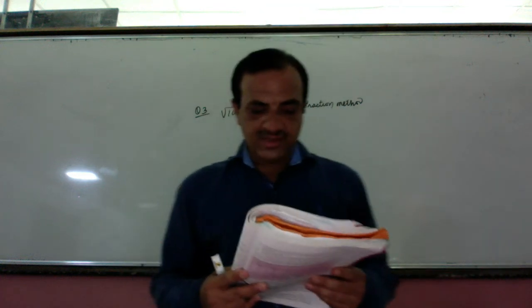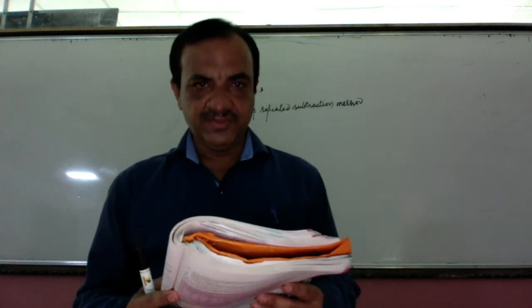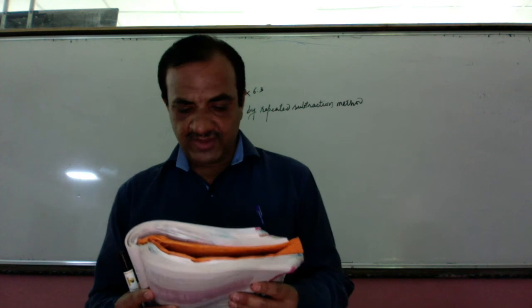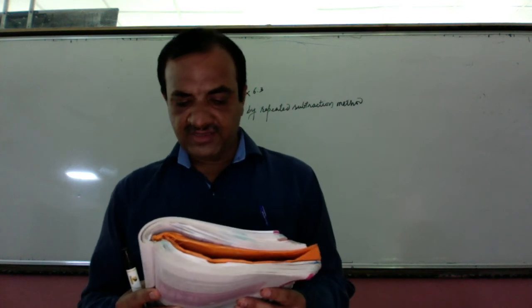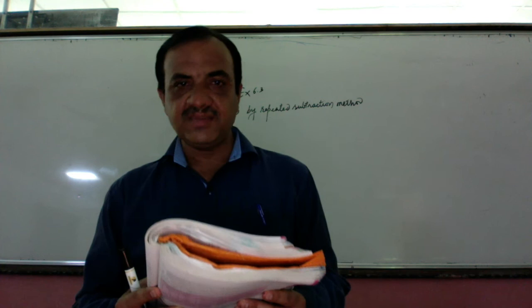Now this is question number three of exercise 6.3. The question is, find the square roots of 100 and 169 by the method of repeated subtraction.